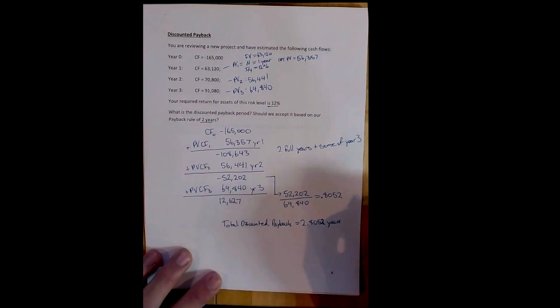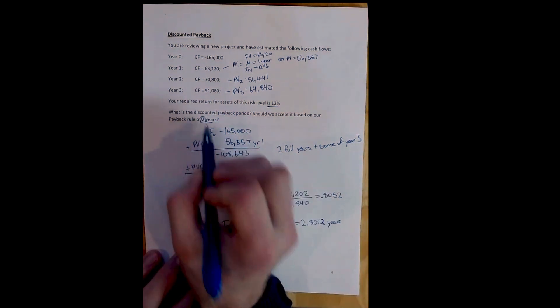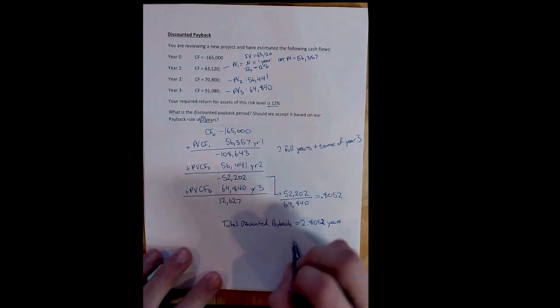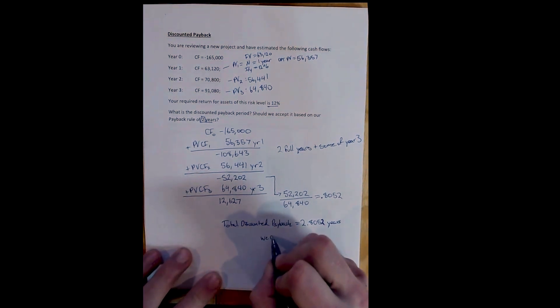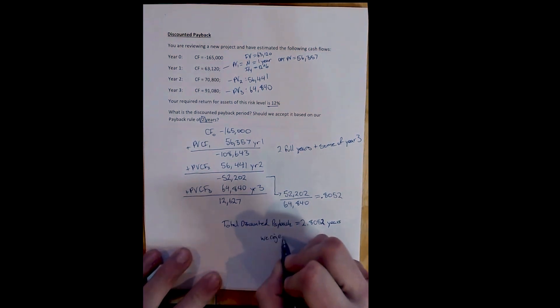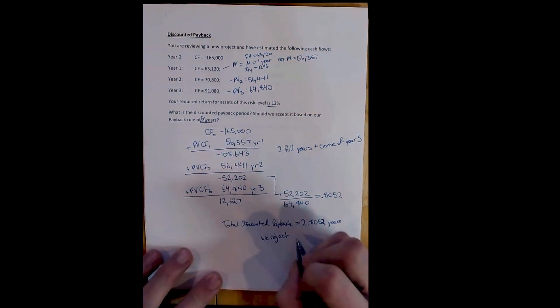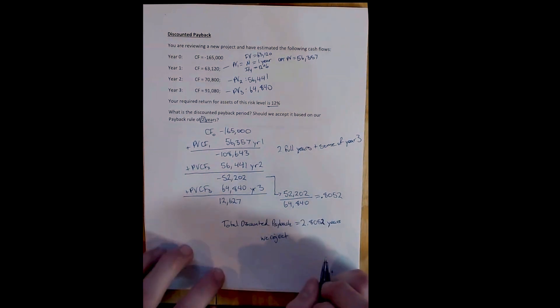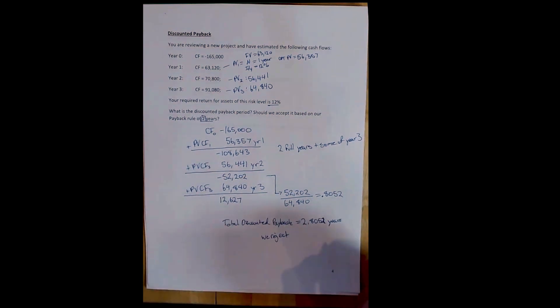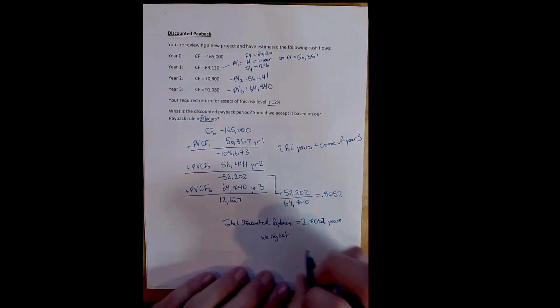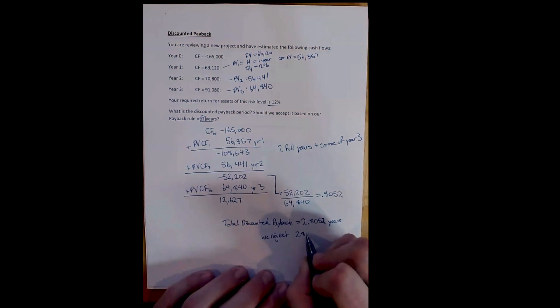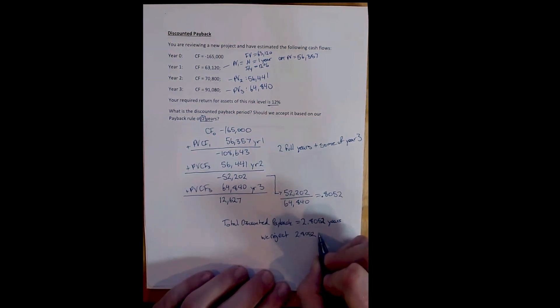Part two: do we accept the project based on a payback rule of two years? Here, we reject — this project takes longer than two years. The discounted payback rule works the same as the payback rule: we reject any project that takes longer than our arbitrary cutoff.